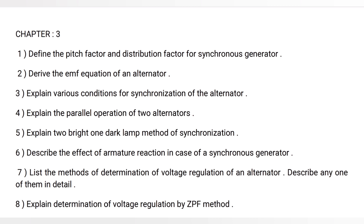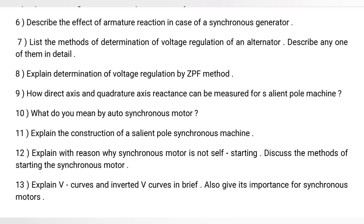Question 6: Describe the effect of armature reaction in the case of a synchronous generator. Question 7: List the methods of determination of voltage regulation of an alternator; describe any one of them in detail. Question 8: Explain determination of voltage regulation by the ZPF method. Question 9: How can direct axis and quadrature axis reactances be measured for a salient pole machine? Question 10: What do you mean by autosynchronous motor?